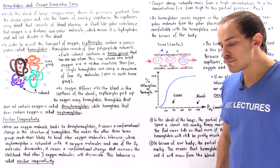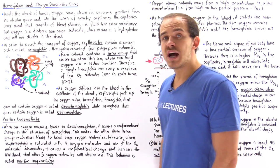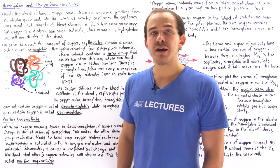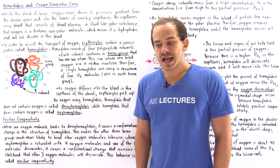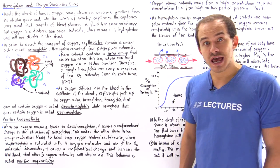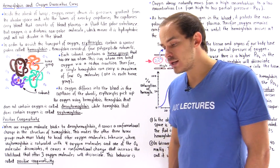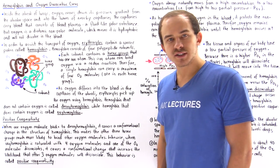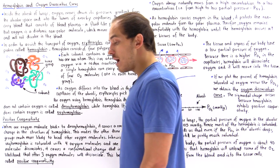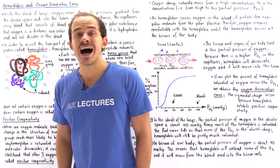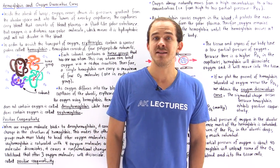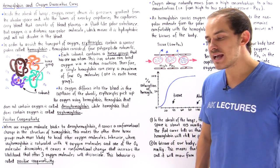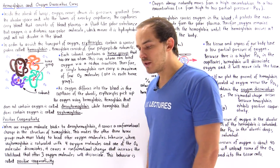Blood plasma consists predominantly of water, which makes it a polar substance. Diatomic oxygen, as it exists in the atmosphere, is a nonpolar molecule, and that means it's hydrophobic — it will not easily dissolve in our blood plasma. So how exactly do we solve this problem?